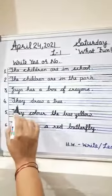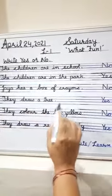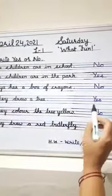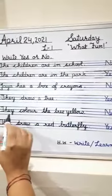Number 4: They draw a tree. Toh hum kya write karenge isme? Yes. Number 5: They color the tree yellow.